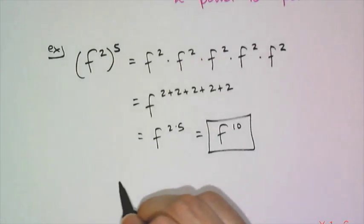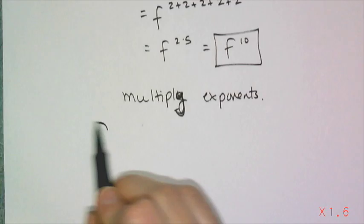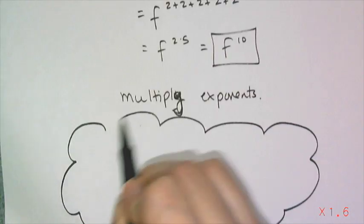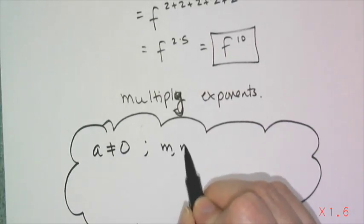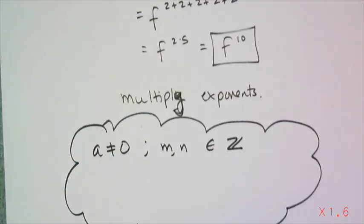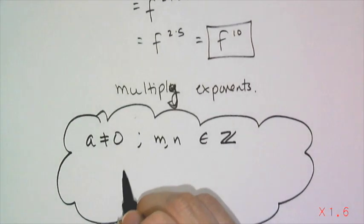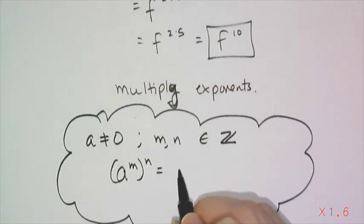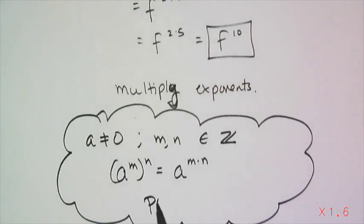So what do I do when I raise a power to a power? I multiply the exponents. If a is not equal to 0, and in algebra 1 m and n are integers, then a to the m raised to the nth power is a to the m times n power. This is called the power rule.